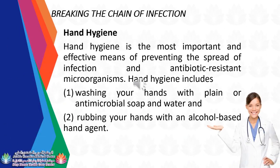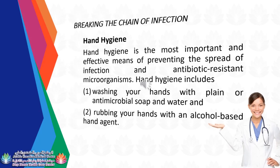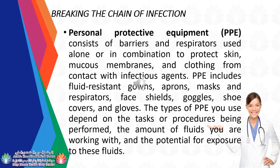Breaking the chain of infection: Hand hygiene is the most important and effective means of preventing the spread of infection and antibiotic-resistant microorganisms. Hand hygiene includes washing your hands with plain or antimicrobial soap and water, and rubbing your hands with an alcohol-based hand agent. Personal protective equipment (PPE) consists of barriers and respirators used alone or in combination to protect skin, mucous membranes, and clothing from contact with infectious agents. PPE includes fluid-resistant gowns, aprons, masks and respirators, face shields, goggles, shoe covers, and gloves.